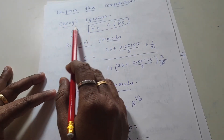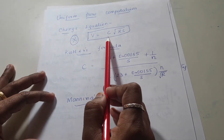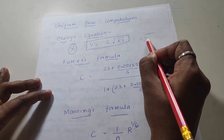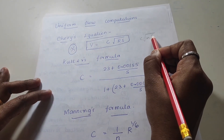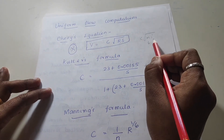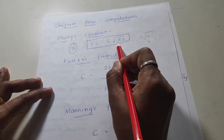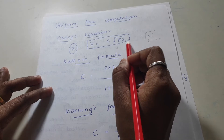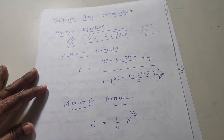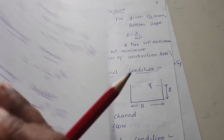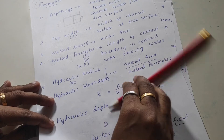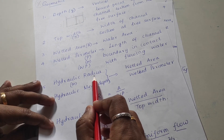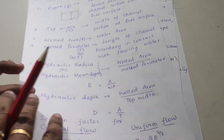Chezy's equation formula is V is equal to C into root of R into S, or you can write it as C into root of M into I. Here M (or R) is the hydraulic mean depth, and I (or S) is the slope. The hydraulic mean depth is also known as the hydraulic radius.